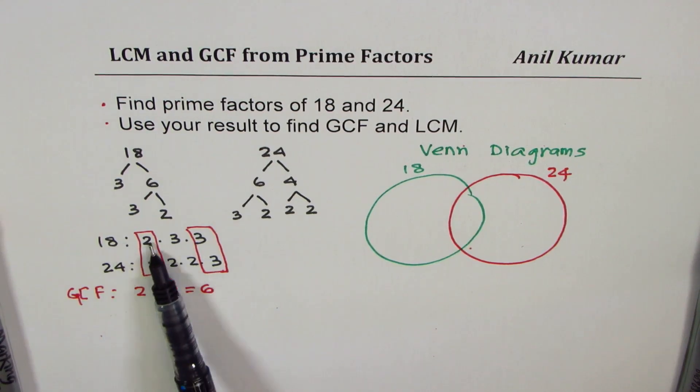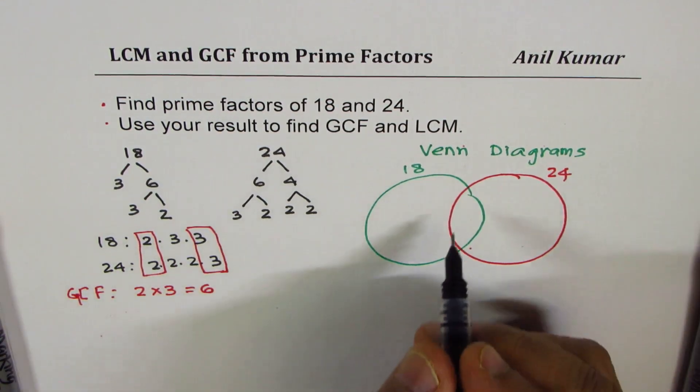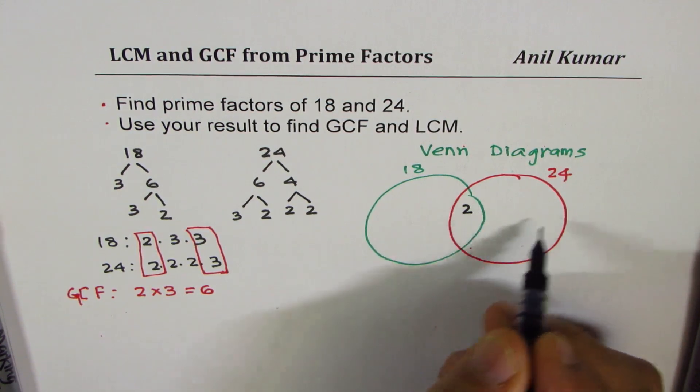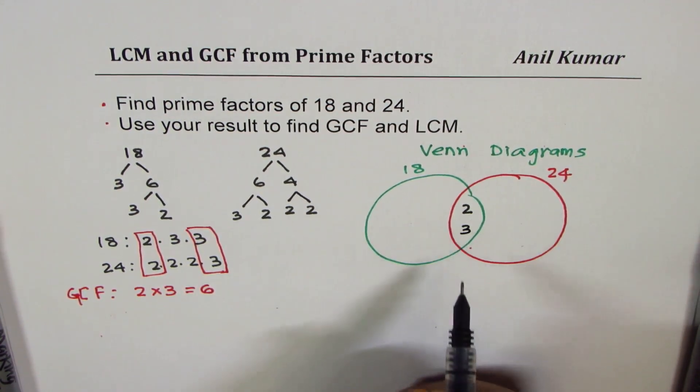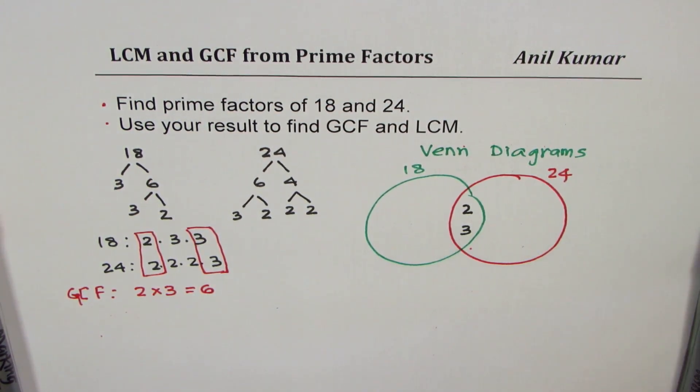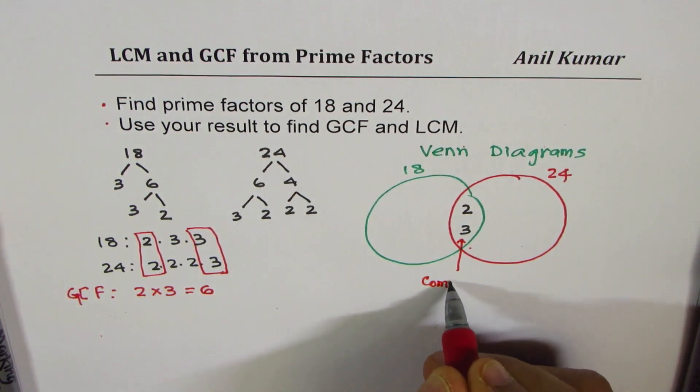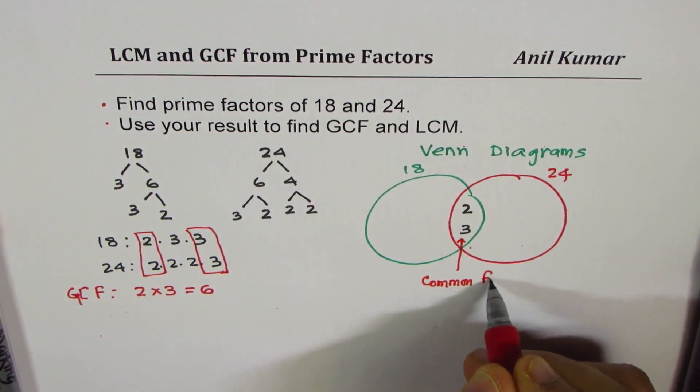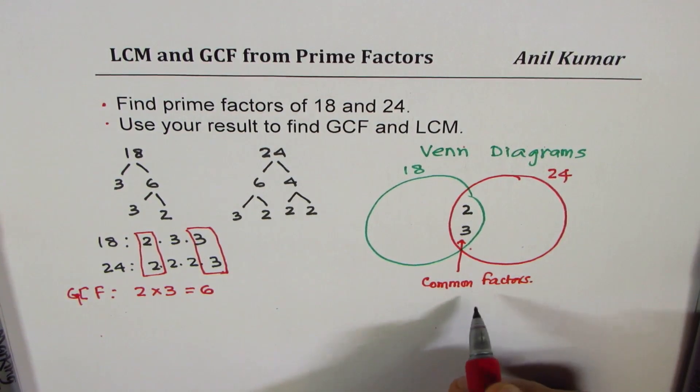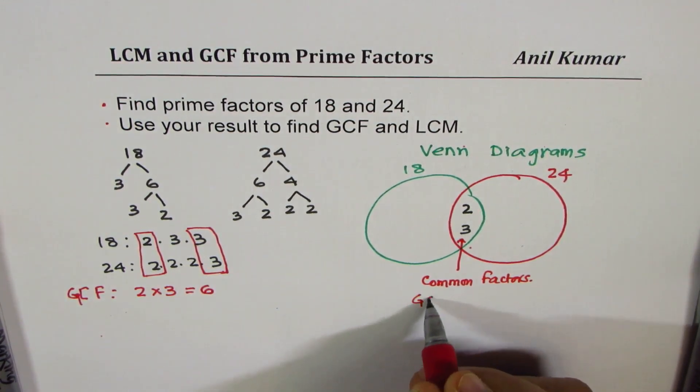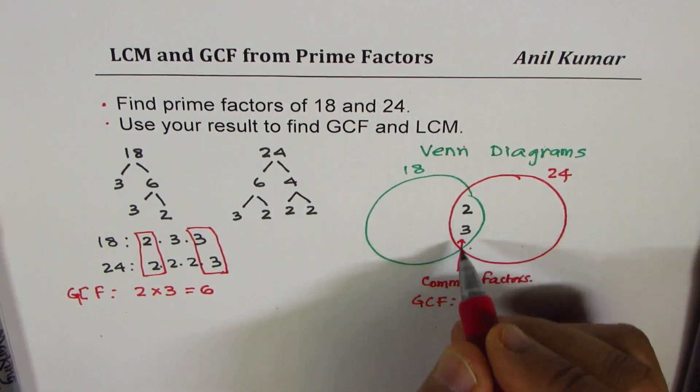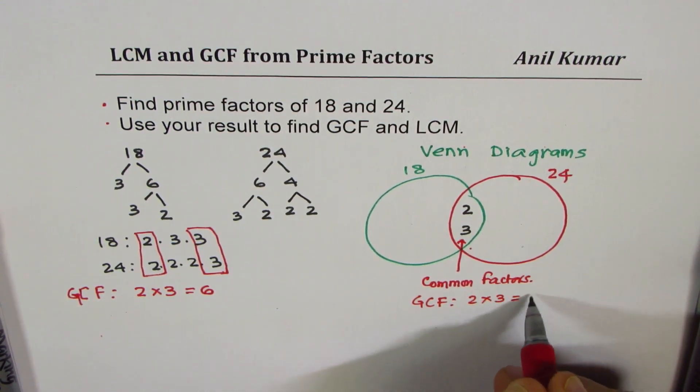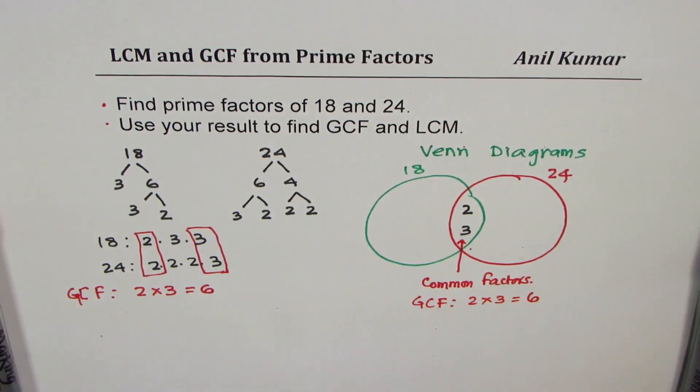As we have seen, the common factors are 2 and 3. So I could write them in center. This is intersection of these two, which represents factors common to both 18 and 24. So that is common factors. To find the greatest common factor, what do we do? We multiply them. We get 2 times 3 equals to 6. So that is how we get the greatest common factor.